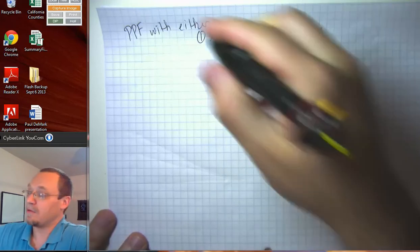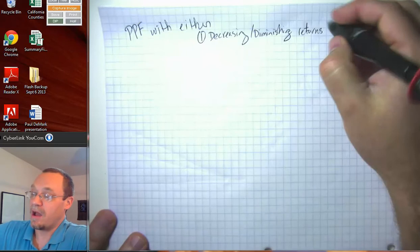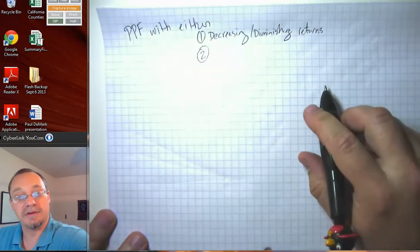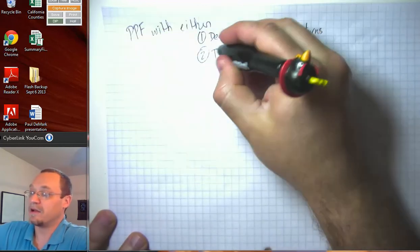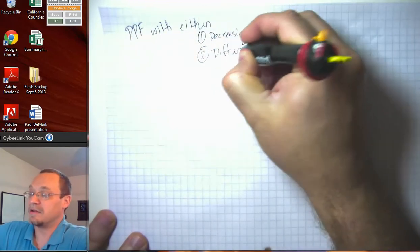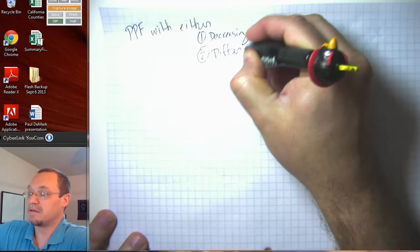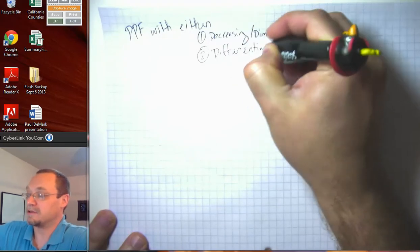A prominent reason for having decreasing or diminishing returns could be that we have differentiated factors of production.